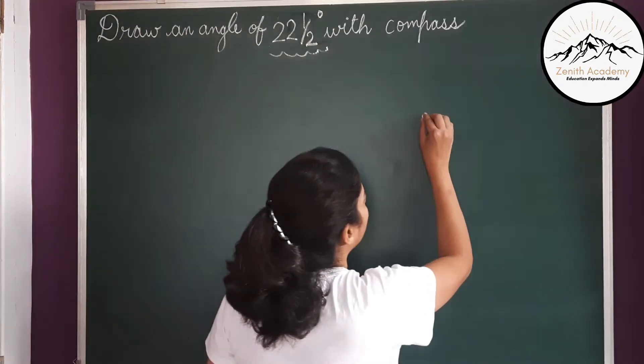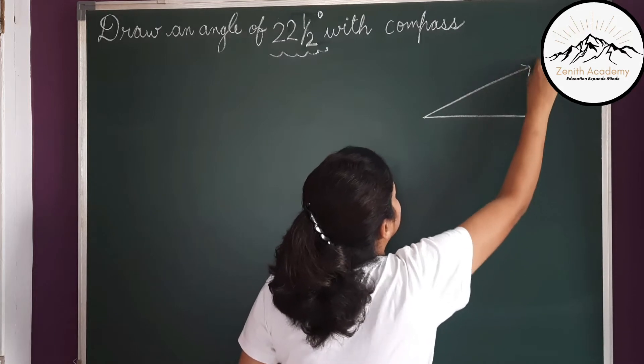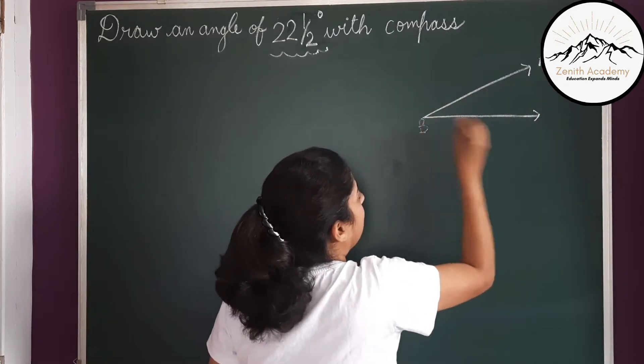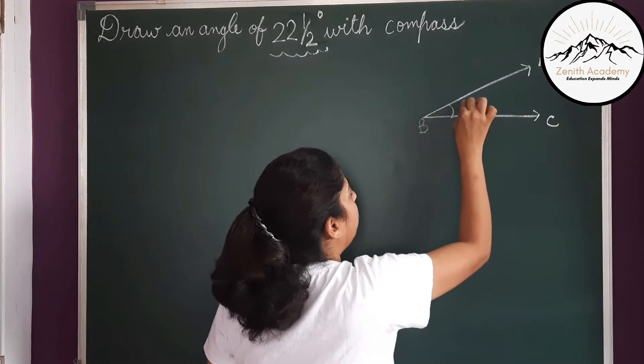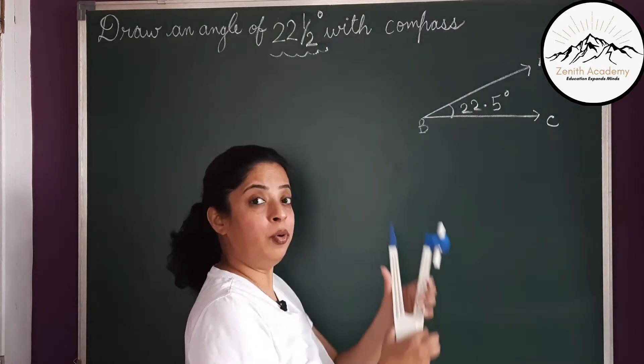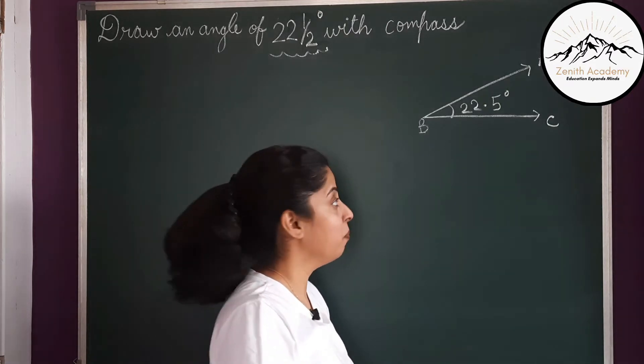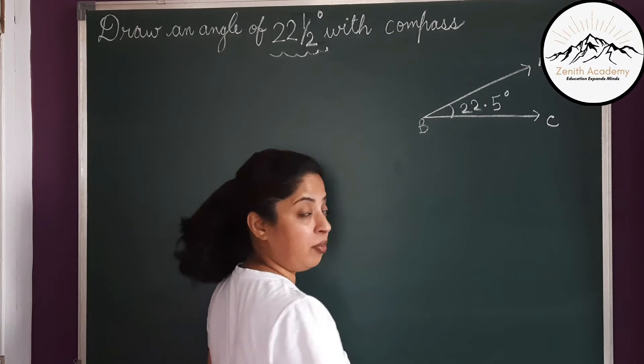So suppose you want to draw an angle ABC like this, ABC which is 22.5 or 22 and a half degree, and you have to use compass and scale to draw that and not the protractor. So how will you draw 22.5?